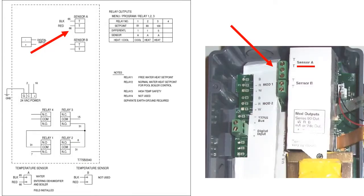The sensor connection is in the upper right corner of the water temperature schematic page. The two sensor wires are connected to the top two terminals of sensor A on the controller. The sensor is to be mounted on the water line entering the boiler and dehumidifier.